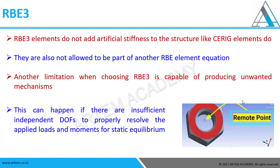RBE3 elements do not add any artificial stiffness - it is just for transferring the load. It is not going to capture the stiffness like CE-rigid does with the mass element. One of the most important limitations: RBE3 is capable of producing unwanted mechanisms. If we don't know in which direction force is applied, it may create issues because the slave nodes are independent - the equations are written in terms of independent nodes. That's why it may create an unwanted mechanism, so we must understand the purpose and physics of the model to replicate it correctly here.